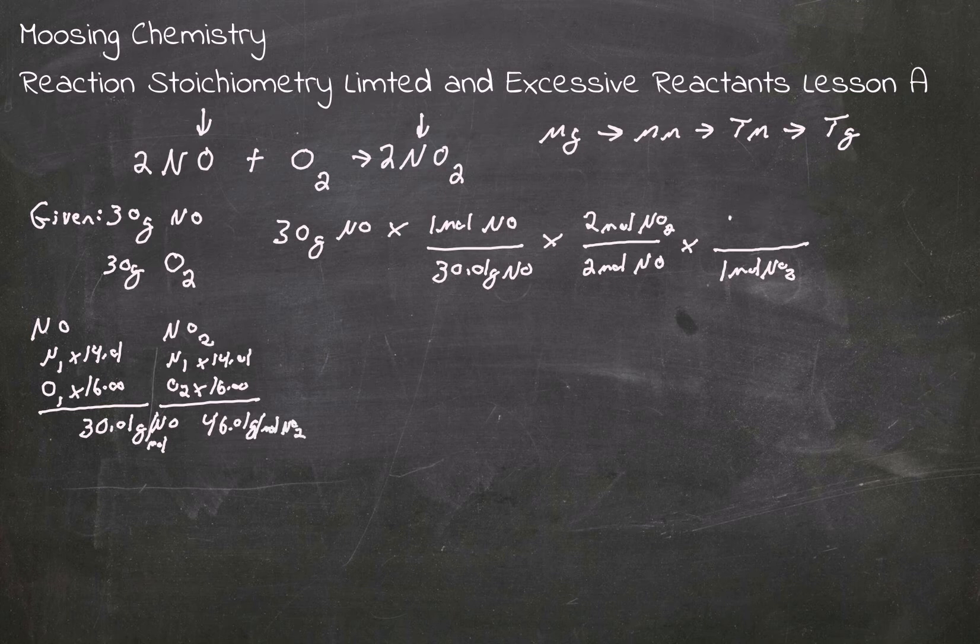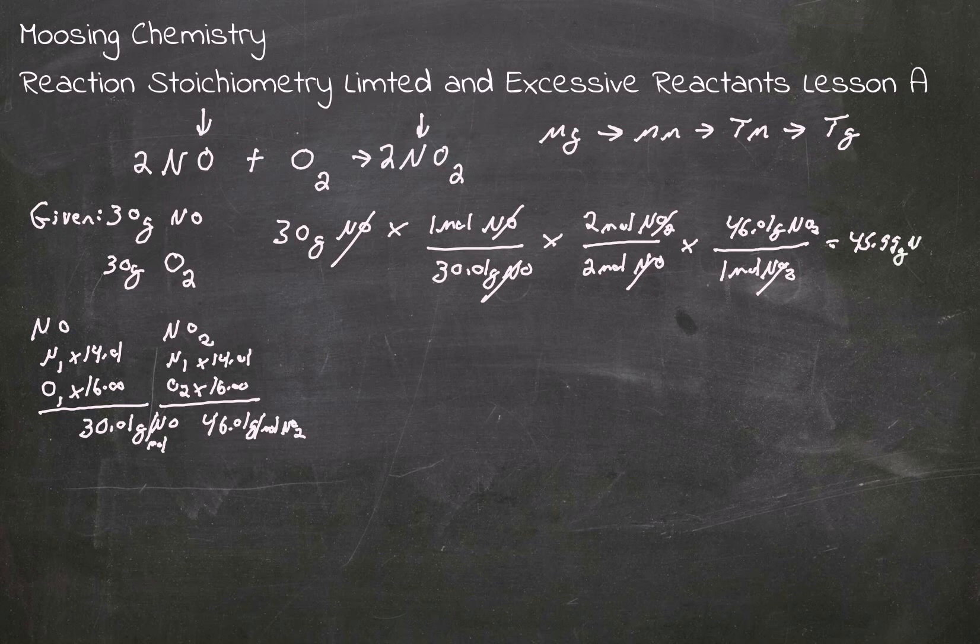So that's going to give me 46.01 grams of NO2. So now grams cancel out, moles cancel out, and then we multiply by grams. So we go 30 divided by 30.01 times 2 divided by 2 times 46.01. And that gives me 45.99 grams of NO2.